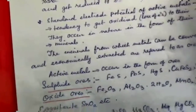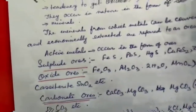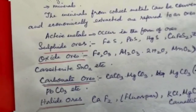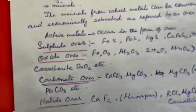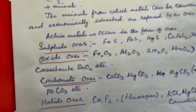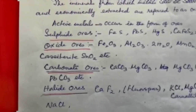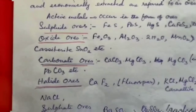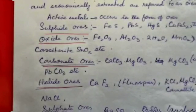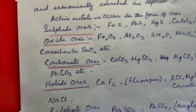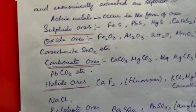Examples: sulfide ores — iron pyrites, galena, etc. Oxide ores — hematite, etc. Carbonate ores — dolomite, siderite, etc. Halide ores — fluorspar, carnallite, etc. Sulfate ores — epsomite, epsalite, etc.